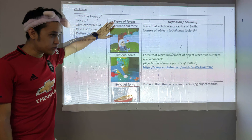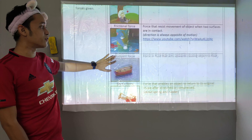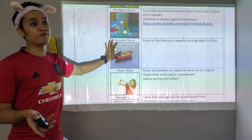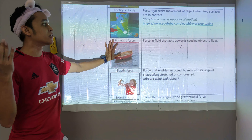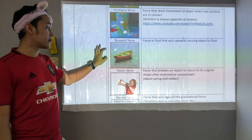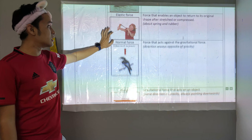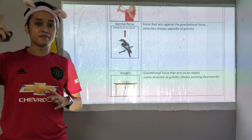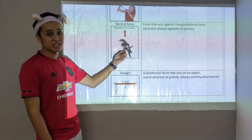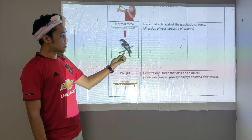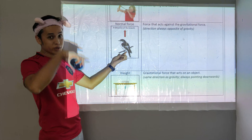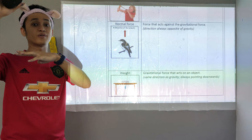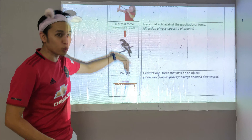So we have gravitational force, and then we also have frictional force and buoyant force. Remember buoyant force is about floating — if you can float on water, you have buoyant force. And then elastic force and normal force. Remember that normal force is the one that is opposite to gravitational force. So you see the bird sitting on the tree — it doesn't go down because of the branch. The branch acts as a normal force in opposition to gravitational force, so the bird won't go down.